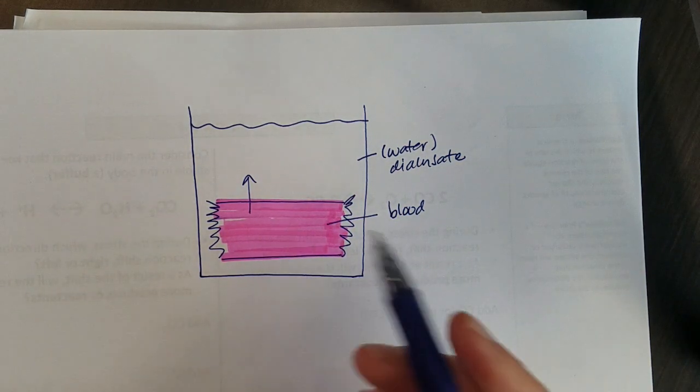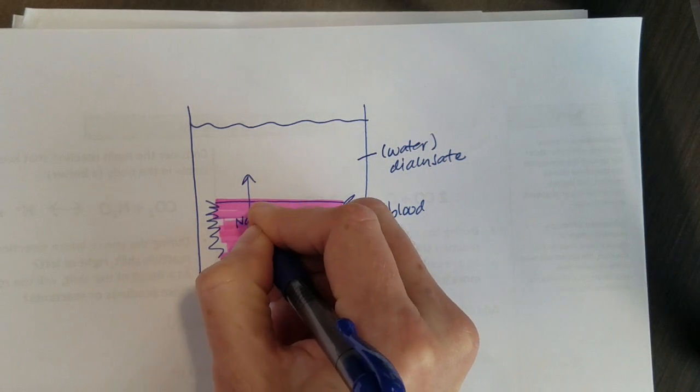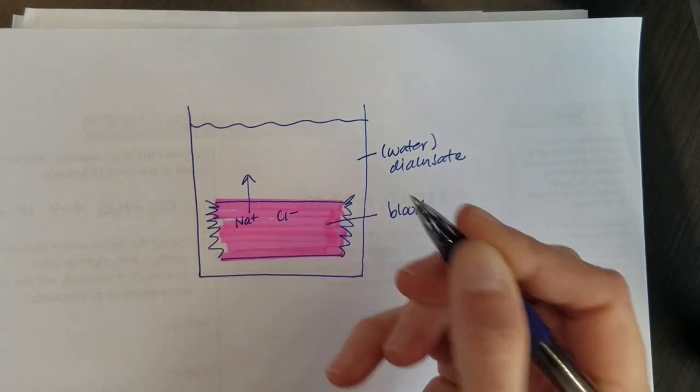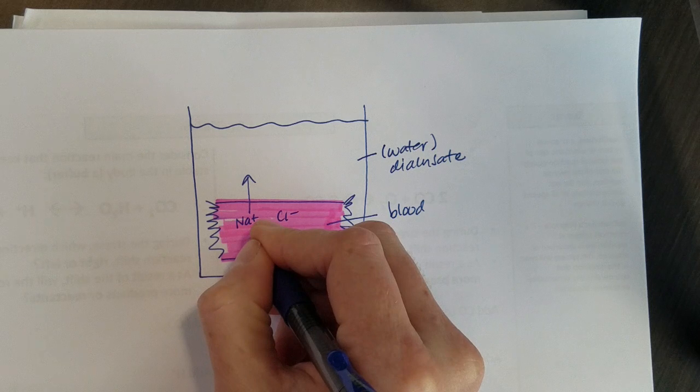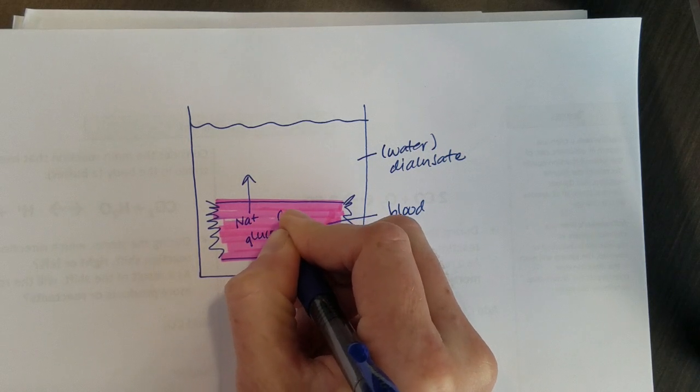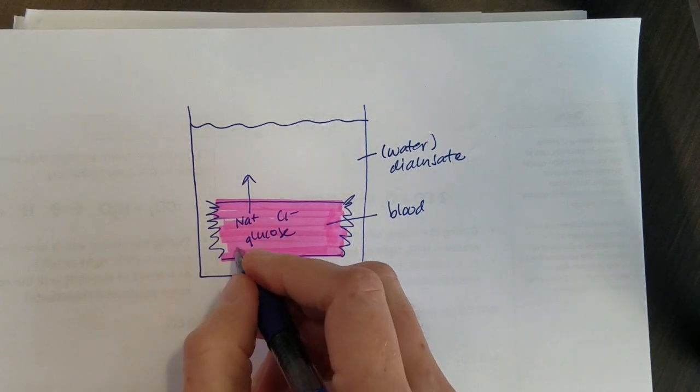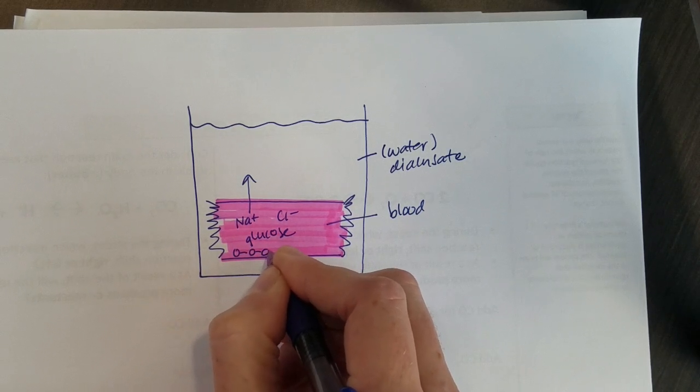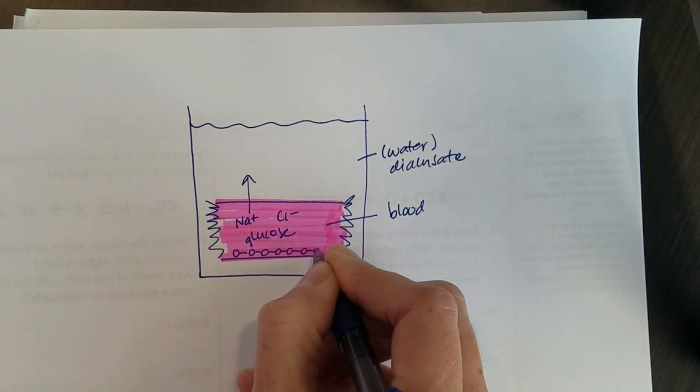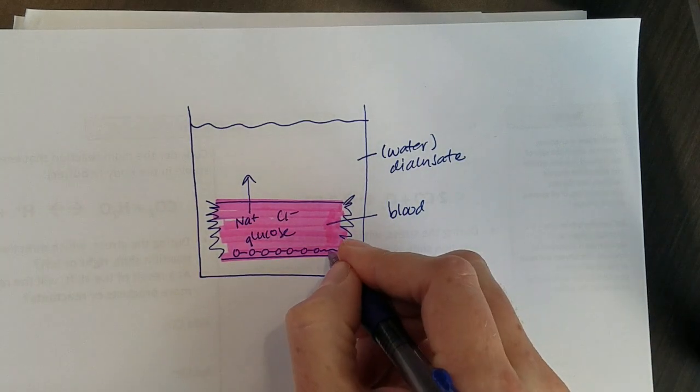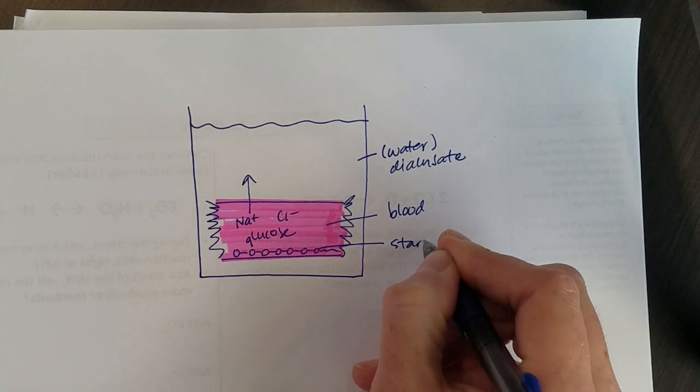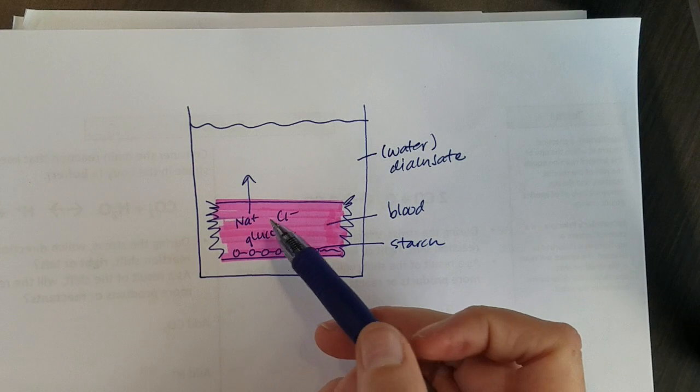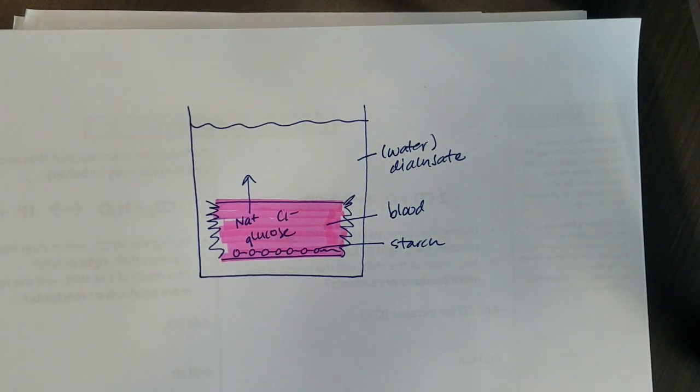The things we're going to put into our blood today are sodium chloride, glucose, and starch. Starch is a huge long polymer of glucose molecules. So we're going to put all of those into our blood.